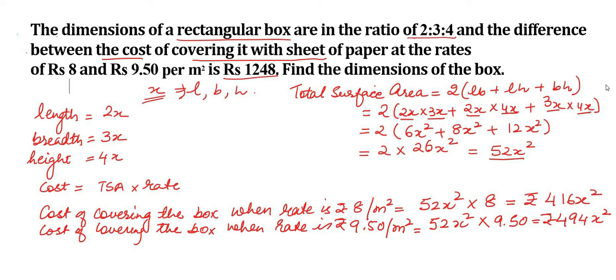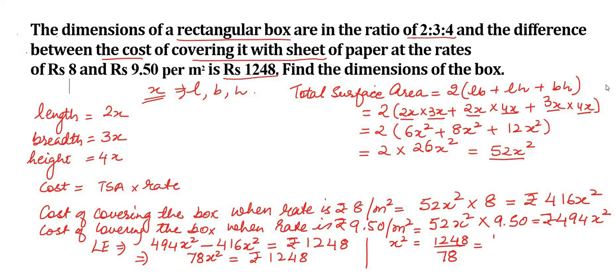Now we have to find the difference. Difference is rupees 1248. So, 494x² minus 416x² is equal to rupees 1248. That is 78x² is equal to rupees 1248. Therefore, x² is equal to 1248 divided by 78, and this is equal to 16. x² equal to 16 is 4². Therefore, x is equal to 4.